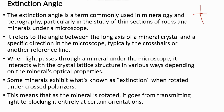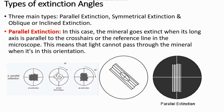Extinction means the mineral will turn dark or be dimmed. When you rotate the stage of the microscope, the mineral will go from transmitting light to utterly blocking the light at a certain direction. So when a mineral becomes dark, we say it's extinct.